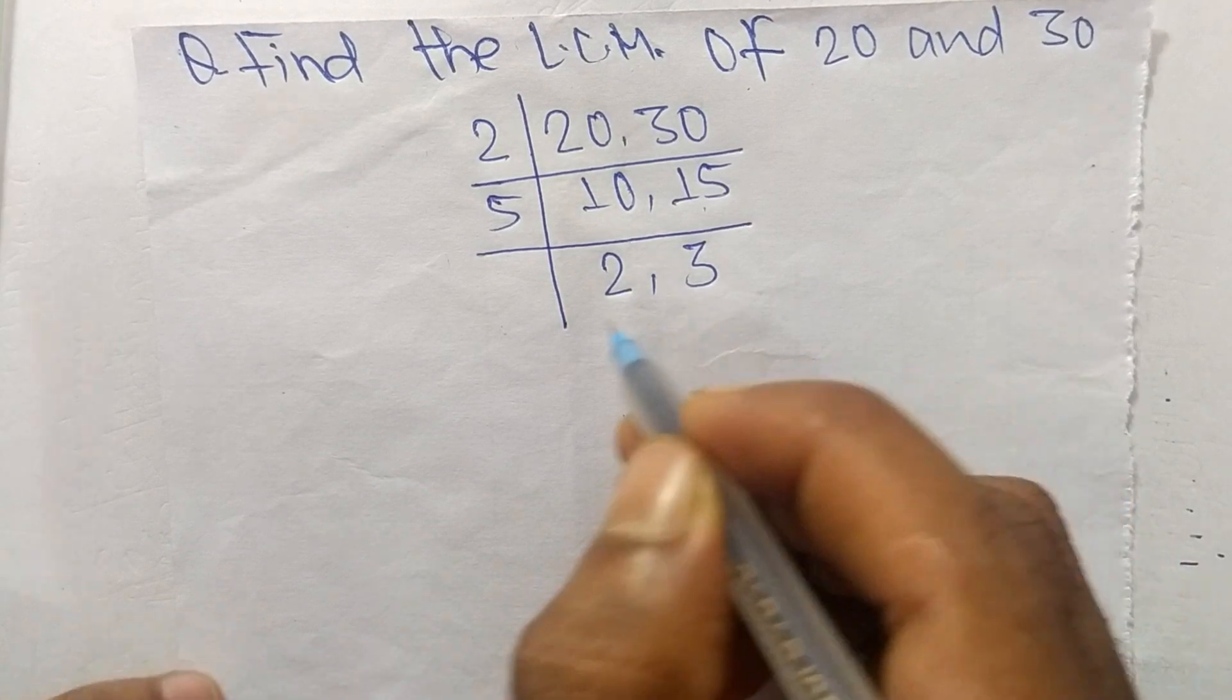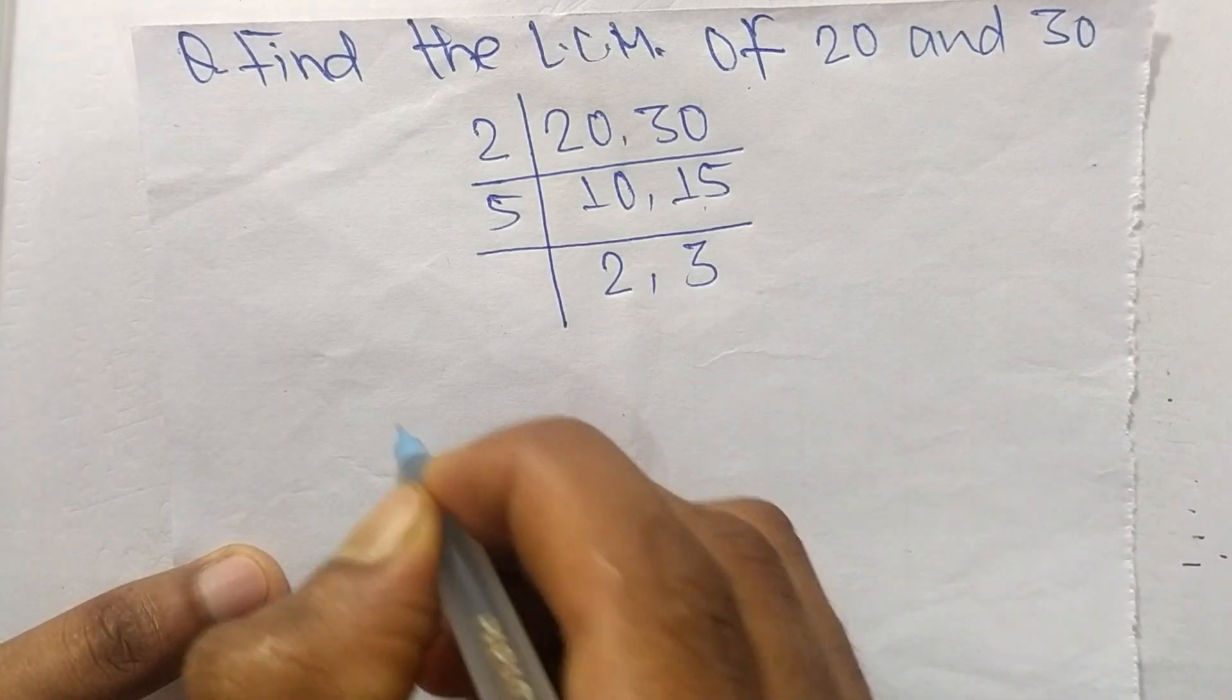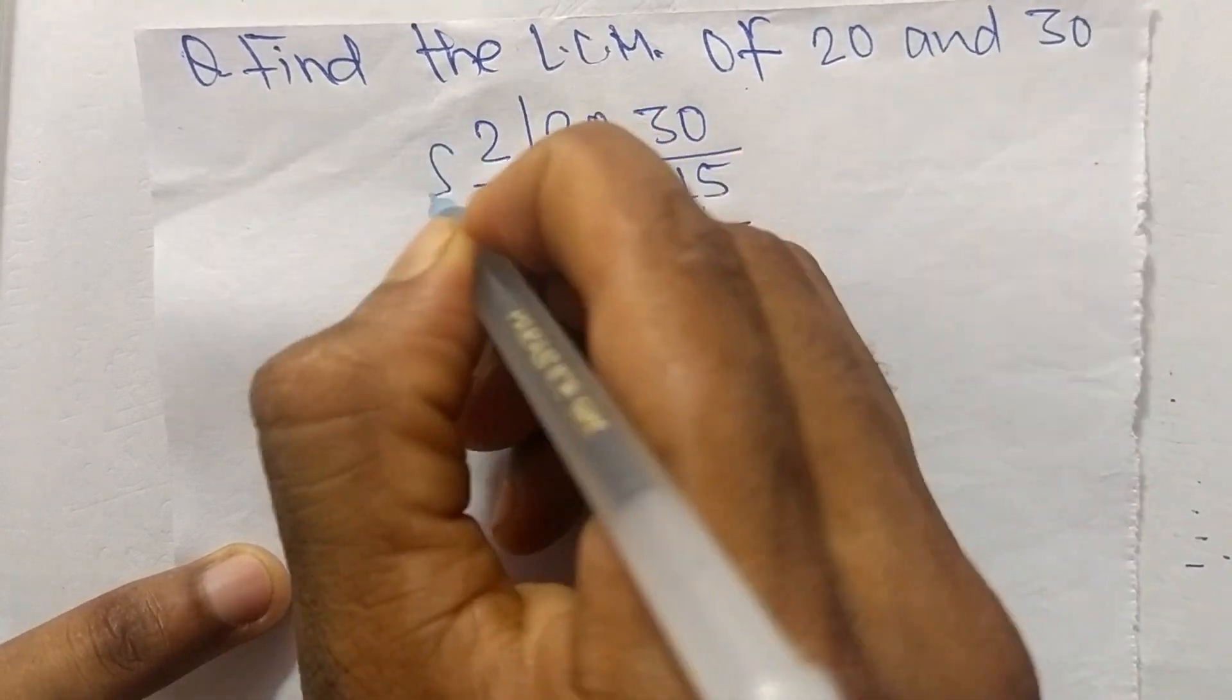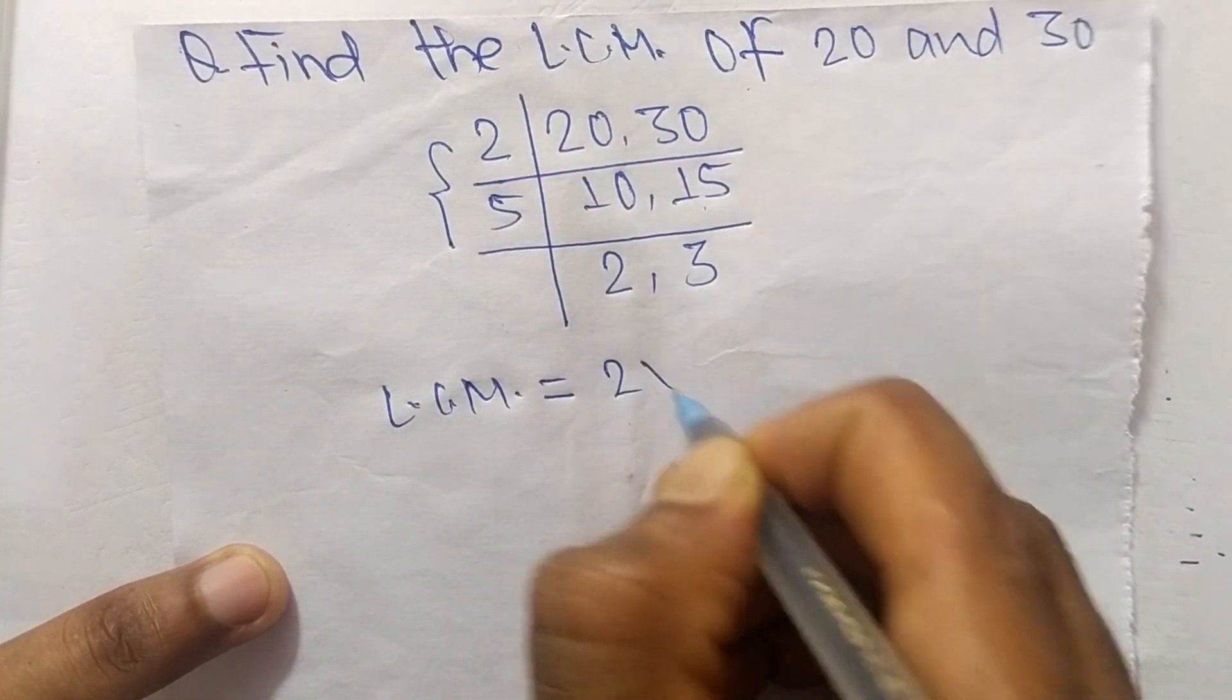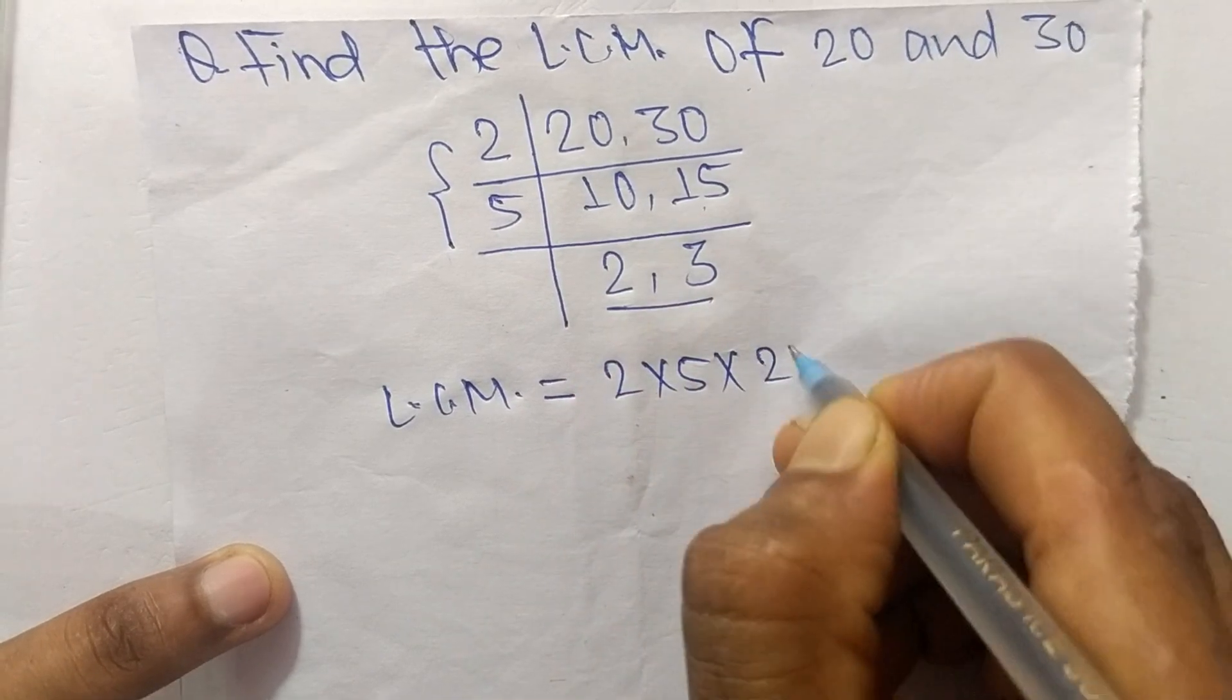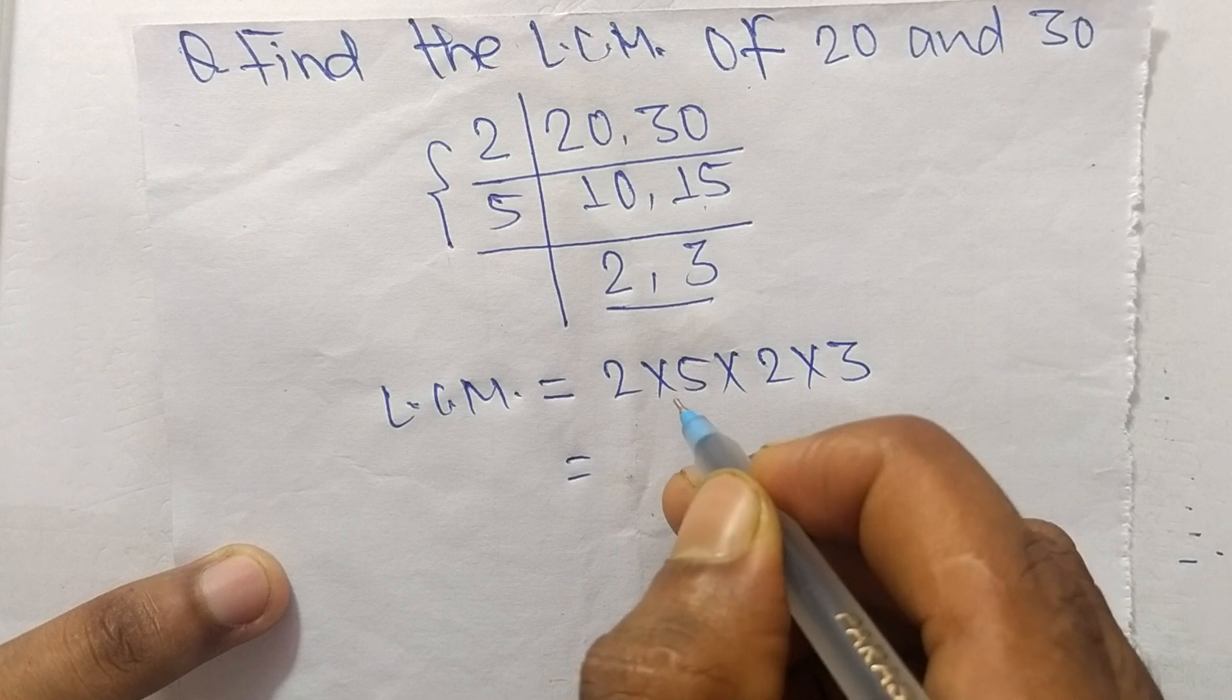and 3, which are not exactly divisible by the same number. So its LCM is equal to, from this part, 2 times 5, and from this part, 2 times 3. So 2 times 5 means 10